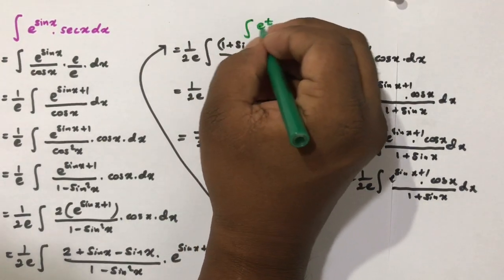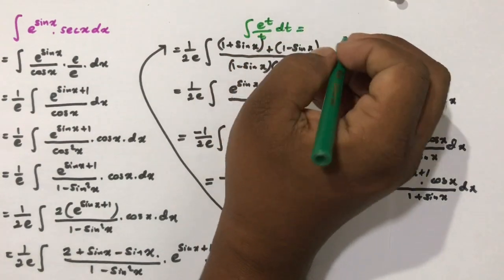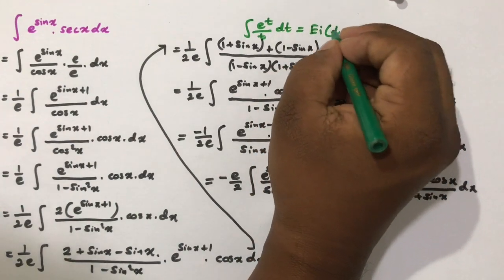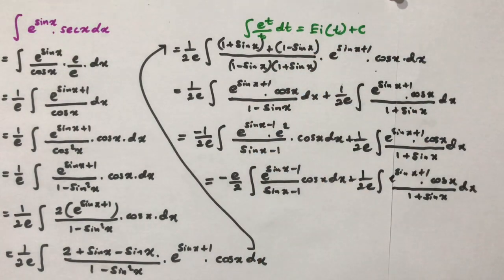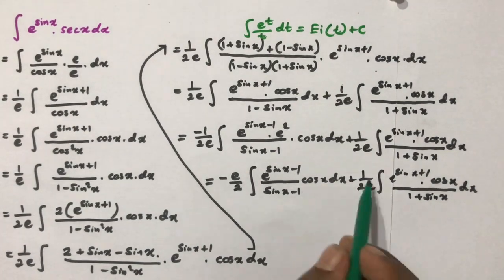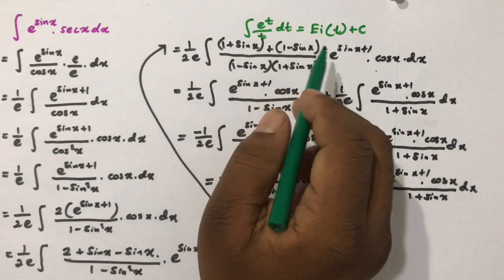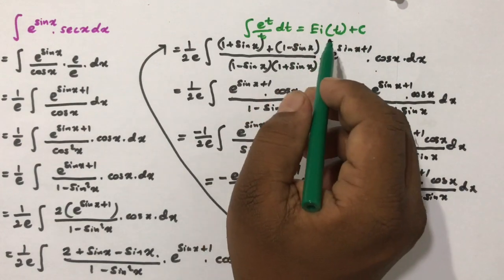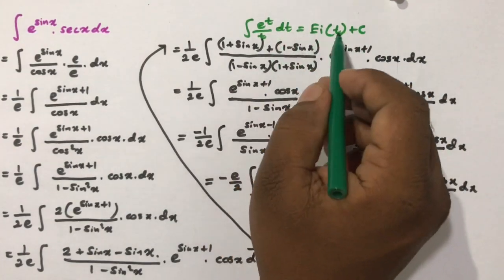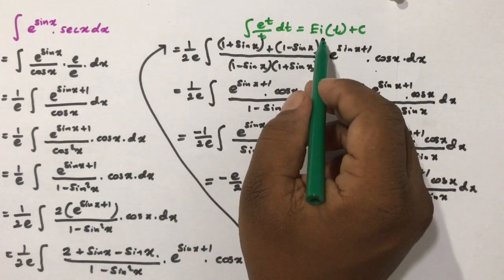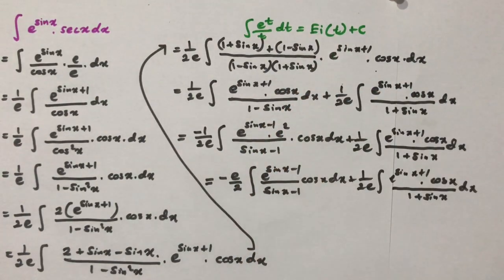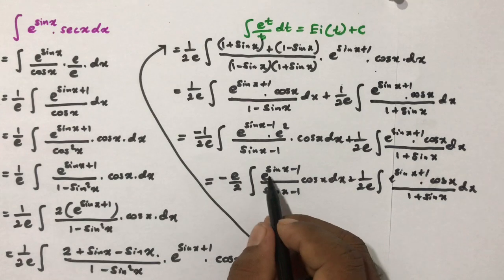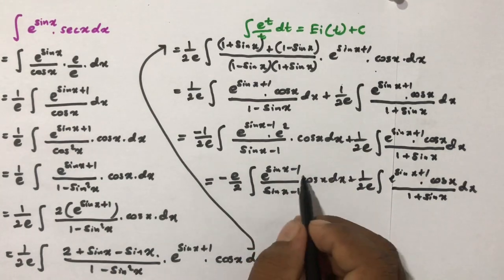Now we use the known result that the integral of e to the t over t dt equals the exponential integral Ei(t) plus C. This is a special function on the complex plane. Both integrals are of this form — e to the t over t times dt — where the derivative of sine of x is cosine of x, so we can apply this formula directly.